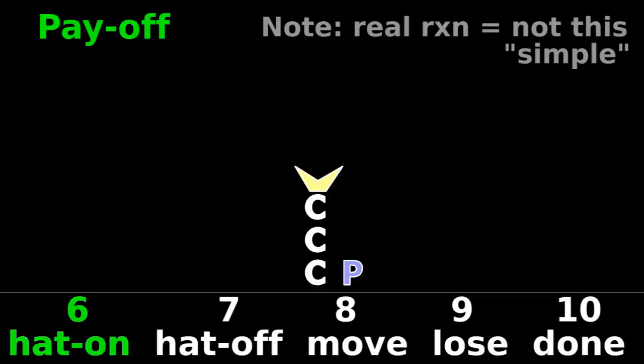6. On the hat, add a phosphate and make a high energy bond in NADH. 7. Off the hat phosphate to make an ATP.